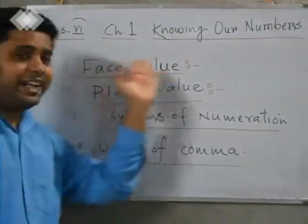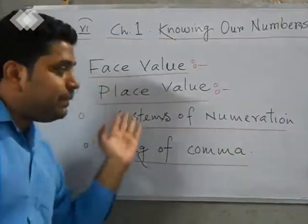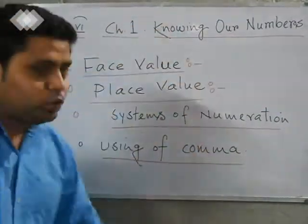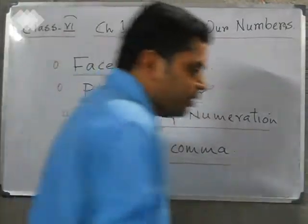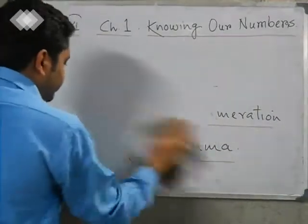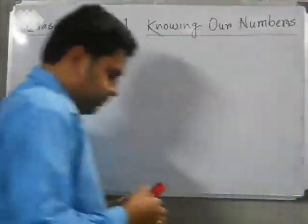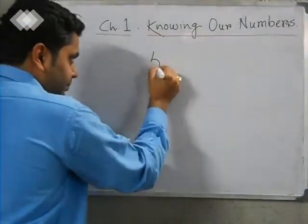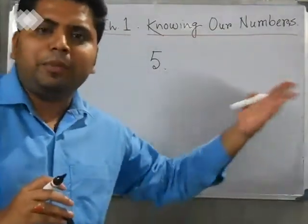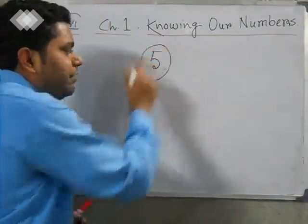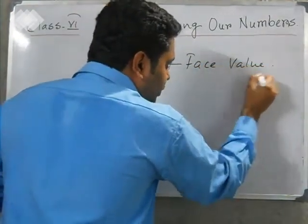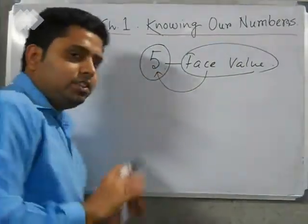Today's topics are face value, place value, systems of numeration, and using of comma. First of all, what is face value and place value? Look here — this is 5. What is the value of 5? The value is obviously 5. The value of 5 will not change; it is always 5. So this is the face value. The face value of 5 is only 5.